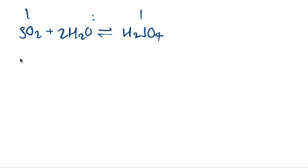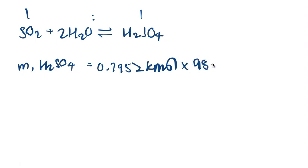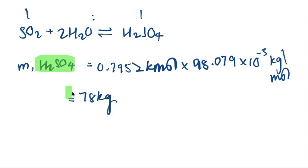We can calculate the mass of H2SO4 based on this molar ratio. So we have 0.7952 kilomoles multiplied by 98.079 times 10 to the minus 3 kilograms per mole, that's the molecular weight. We get 78 kilograms of H2SO4.